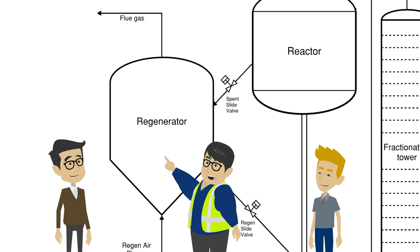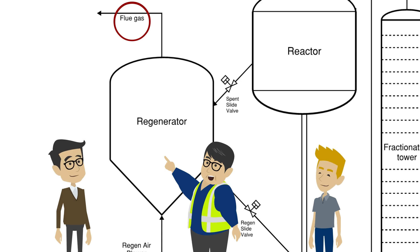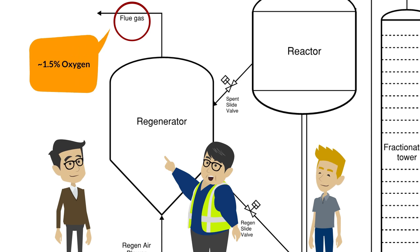Excess O2 is also monitored on the flue gas to ensure the catalyst is being regenerated properly. Typically, there's around 1.5% O2 in the flue gas stream to help ensure there is complete combustion in the regenerator.